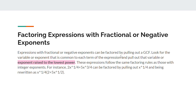Factoring expressions with fractional or negative exponents. Expressions with fractional or negative exponents can be factored by pulling out the greatest common factor. Look for the variable or exponent that is common to each term and pull out that variable or exponent raised to the lowest power — it must be the lowest power. These expressions follow the same factoring rules as those with integer exponents. For instance, 2x to the power of one-fourth plus 5x to the power of three-fourths can be factored by pulling out x to the power of one-fourth, giving x to the one-fourth times 2 plus 5x to the one-half, because three-fourths minus one-fourth equals two-fourths, which equals one-half.